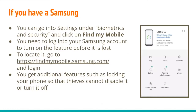If you have a Samsung, you can go into your phone settings under Biometrics and Security and click on Find My Mobile. You need to log into your Samsung account to turn on the feature before it is lost. To locate it, go to findmymobile.samsung.com and log in. You can also get additional features, such as locking your phone so that thieves cannot disable it or turn it off.